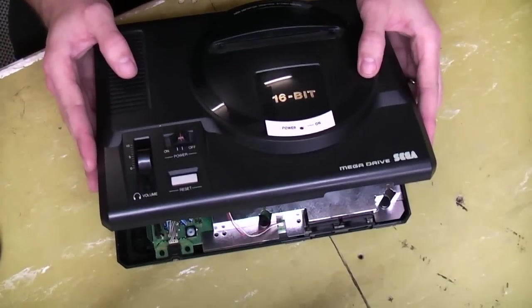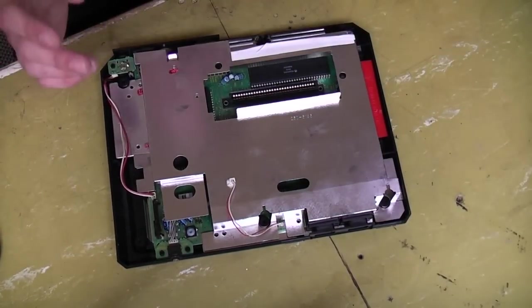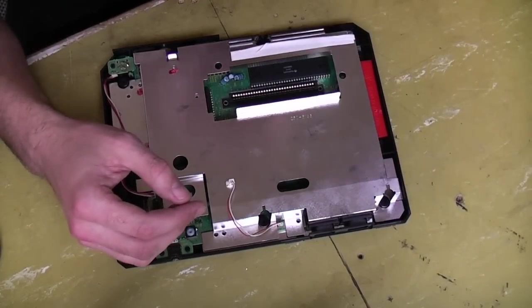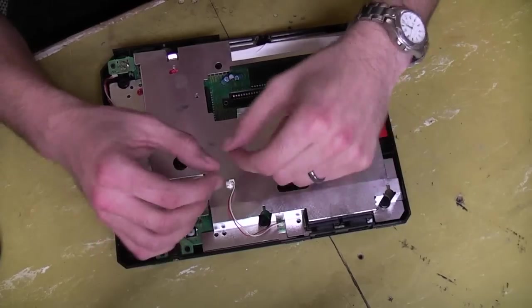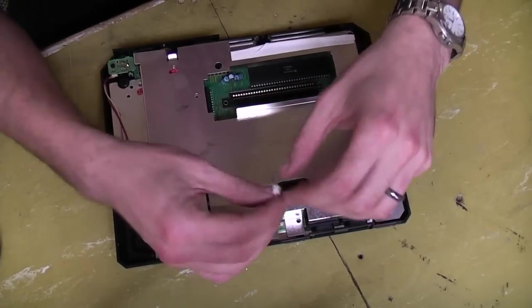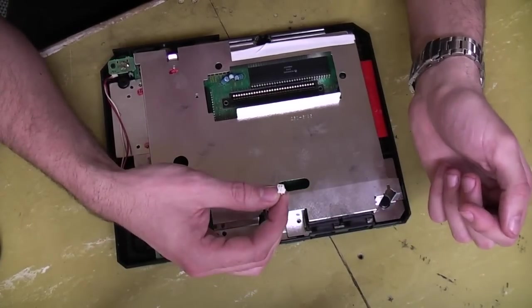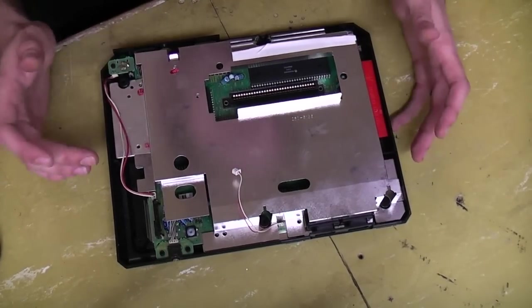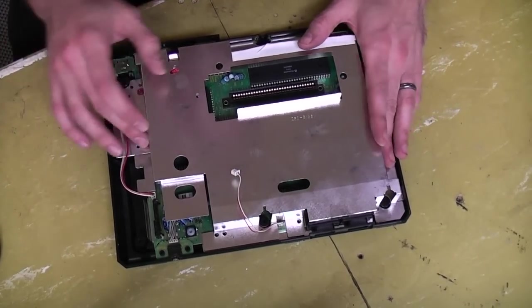You've got to be careful when taking the lid off that the LED, which is mounted up in the lid, has a couple of legs that you need to straighten up, and then you can slide the connector off. I've also unscrewed the shielding.